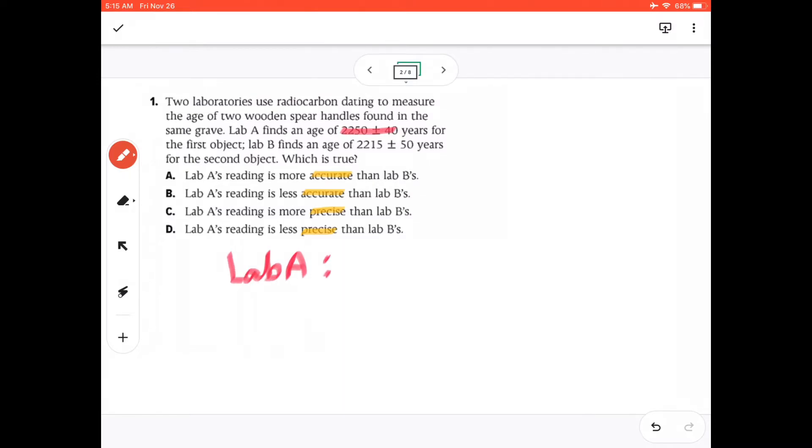the measurements are 2,250 ± 40 years. So the 2,250 is your mid value. If you add 40 years to that, you are going to get 2,290. If you minus 40 from that, it's 2,210.